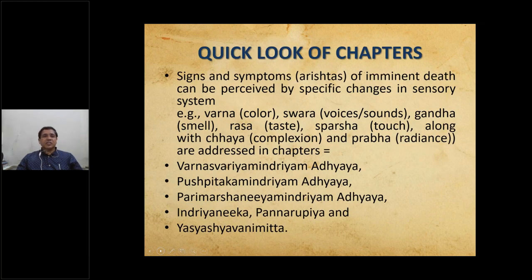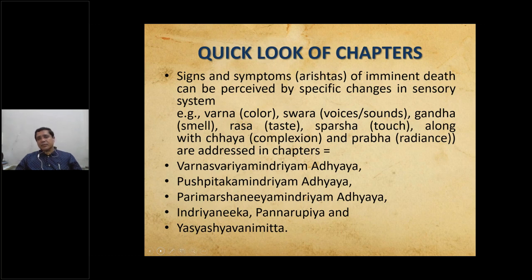Signs and symptoms of imminent death, called Arishtas, can be perceived by specific changes in sensory systems. For example, Varna (color), Svara (voice or sounds), Gandha (smell), Rasa (taste), Sparsha (touch), along with Chaya (complexion of the skin) and Prabha (radiance) are addressed in those chapters. Clinically useful early warning signs have also been mentioned in Purvarupiya Indriya.